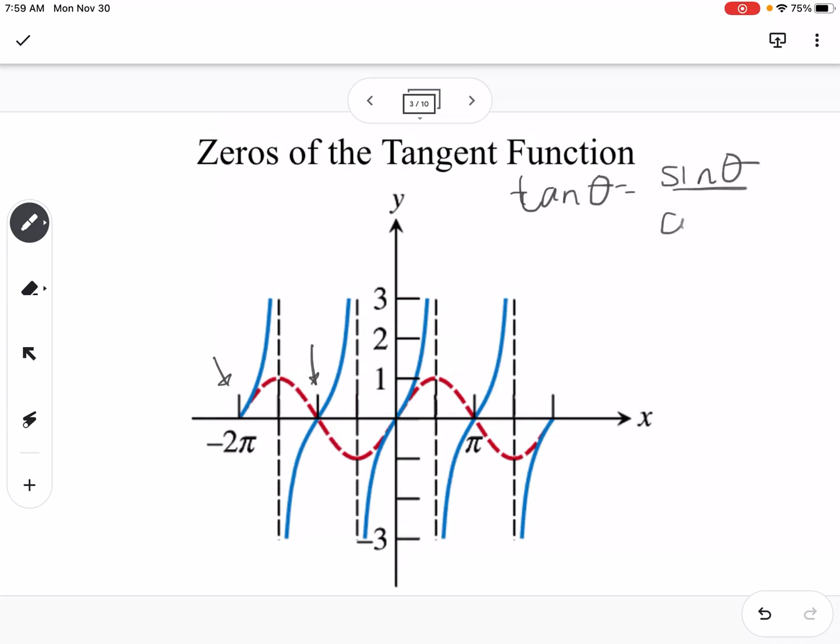We know that our tangent graph is going to be 0 where the numerator is equal to 0, so that's why we have the sine graph now. The red graph is the sine graph, so where sine is equal to 0, that's where our tangent function is going to be equal to 0, where it's going to cross the x-axis.